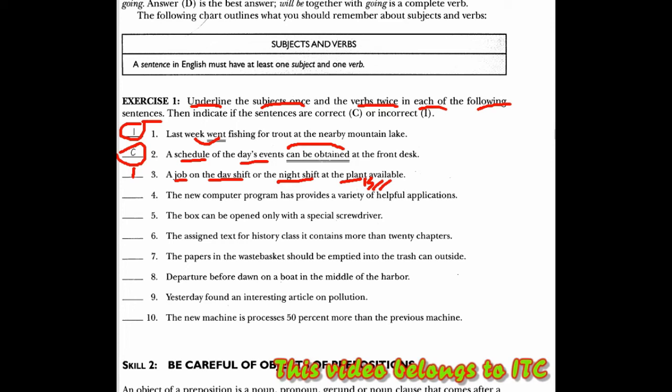Lalu pada bagian nomor 4, kalimat ini juga salah, incorrect juga, subjeknya adalah program. Lalu di sini, dia memiliki dua predikat, yaitu has memiliki beraneka ragam aplikasi berguna, atau menyediakan beraneka ragam aplikasi berguna. Subjeknya ada dua, yaitu salah satunya harus dihilangkan, yaitu has di sini bukan telah. Kalau dia telah, harusnya provide-nya menjadi provided. Jadi di sini, kata kerjanya double.